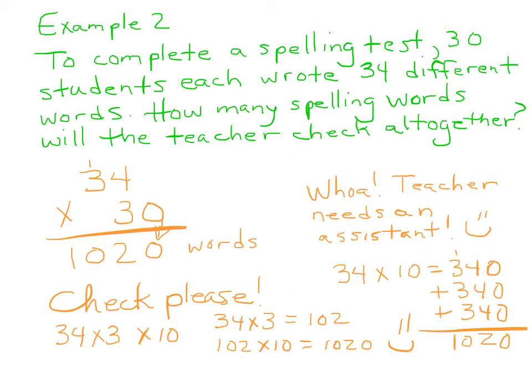So here's your 30. Again, all we're going to do is this is going to say bye-bye, and we're going to bring it down there. Then we say 3 times 4 is 12. So we put our 12. Carry the 1. 3 times 3 is 9, and 1 is 10. 1,020 words. Yikes. Check, please. So what you could do here is do 34 times 10 equals 340, and then add it. Or you can do 34 times 3 is 102. 102 times 10 is 1,020.